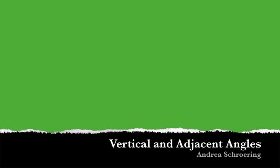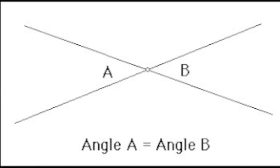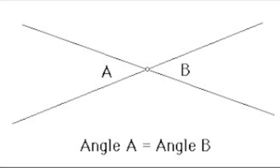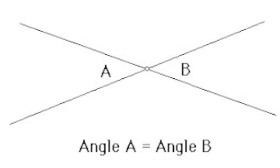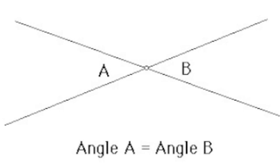Today we are going to be talking about vertical and adjacent angles. Vertical angles are a pair of non-adjacent angles formed by the intersection of two straight lines. Vertical angles are always congruent. Angles A and B in this picture are opposite of each other, therefore making them both vertical and congruent.